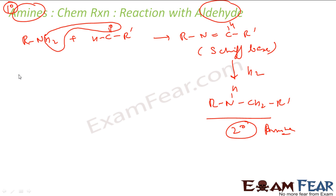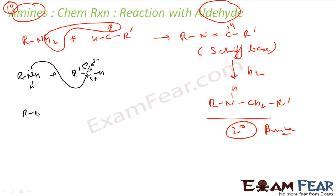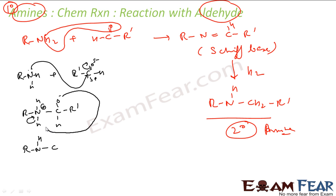Let's see the reaction mechanism. I have R-NH2, and I have R'-COH — slightly negative on oxygen, slightly positive on carbon — so the nitrogen will be attracted to attack this carbon. With this I get R-NH-H attached to C-O-minus, H and N with R'. Since nitrogen has given electrons to this carbon, nitrogen gets a positive charge, and hydrogen — being a good leaving group — will leave as H+.